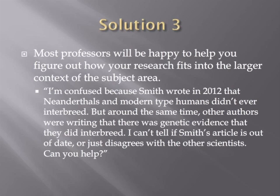The trick is to ask the professor in such a way that they don't get the impression that you're just trying to take a shortcut around understanding the material for yourself. Don't ask, "Did Neanderthals and modern humans interbreed, or is Smith's article true?" Instead try something like, "I'm confused, because Smith wrote in 2012 that Neanderthals and modern-type humans didn't ever interbreed, but around the same time other authors were writing that there was genetic evidence that they did interbreed. I can't tell if Smith's article is out of date, or if he just disagrees with the other scientists. Can you help?" That kind of question shows you've done the work, but you need the benefit of their experience to understand at a deeper level.